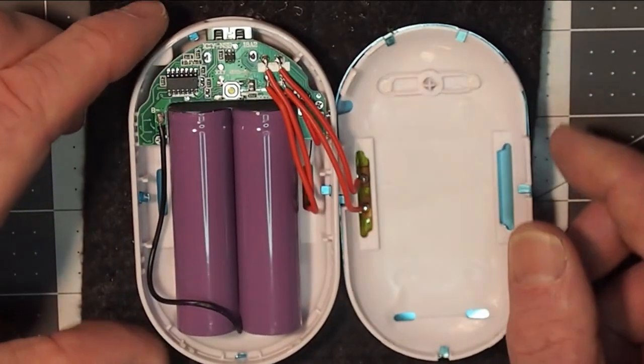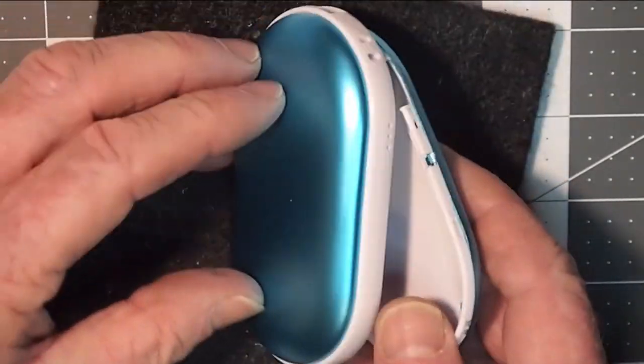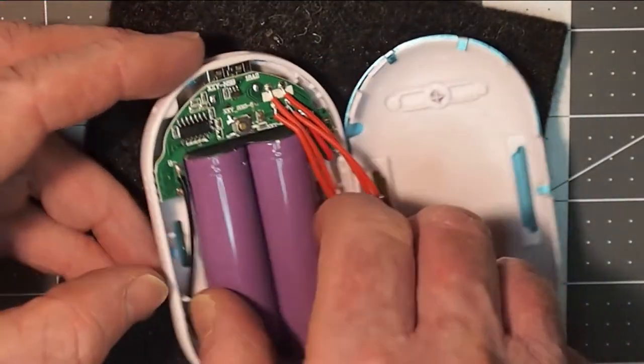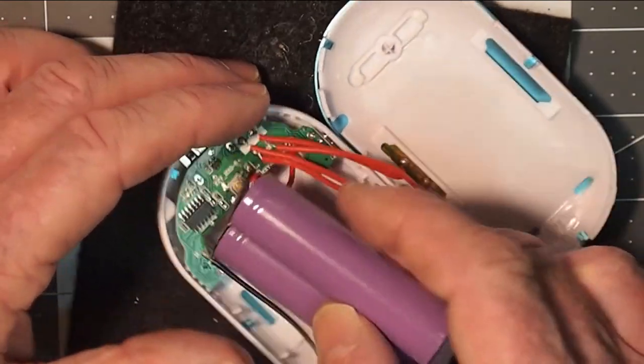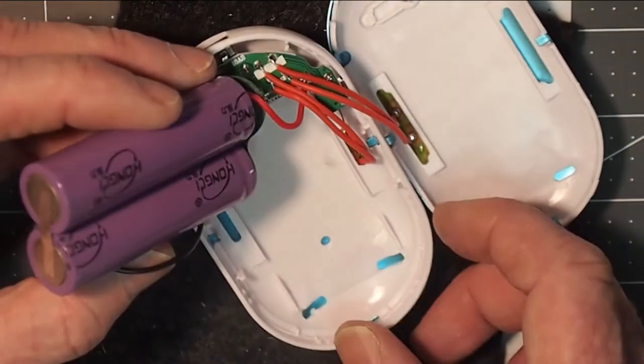This is what the inside of the hand warmer looks like, and there's two 18650 cells in here. I just tested it, they do get it up to 60C if you give it long enough.